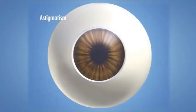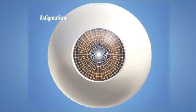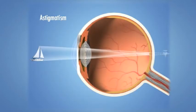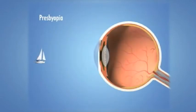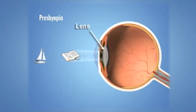Astigmatism occurs when the cornea is curved unevenly, shaped more like a football than a basketball. Light passing through this uneven cornea is not properly focused on the retina, and distance and close vision may both appear blurry. Presbyopia is a normal condition that typically starts around middle age, when the eye's lens becomes less flexible and less able to focus on close objects. A typical sign of presbyopia is the need for reading glasses.